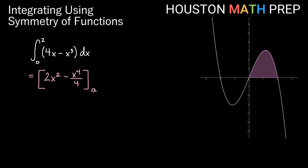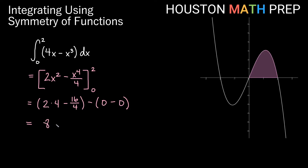Evaluating from 0 to 2 — upper bound first, minus the lower bound. Plugging in 2: 2 times 2 squared is 2 times 4, which is 8, minus 2 to the fourth (16) divided by 4, which is 4. Plugging in 0 gives 0. So we get 8 minus 4, which equals 4. This integral equals 4 square units of area.